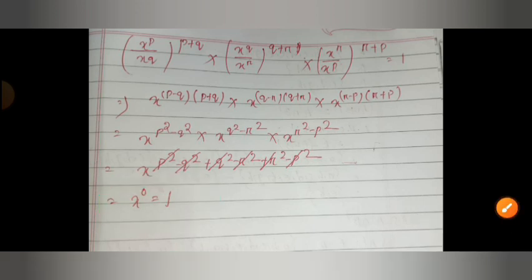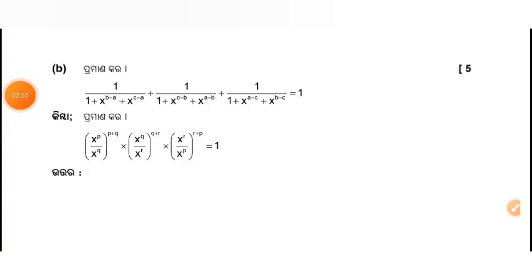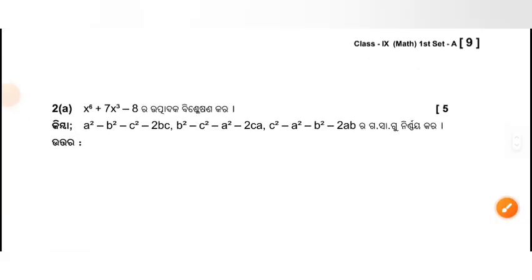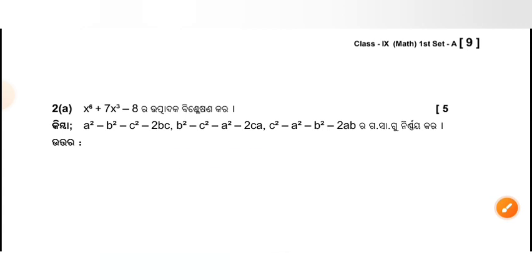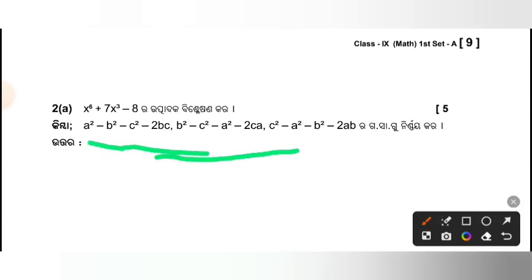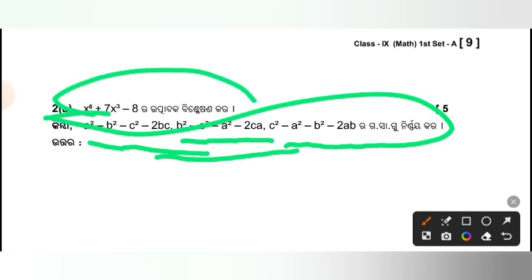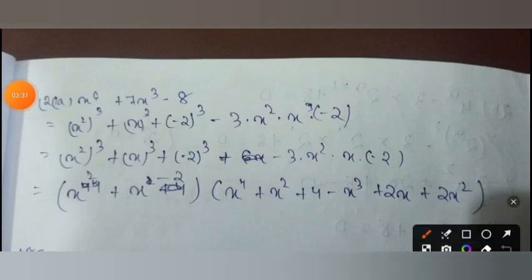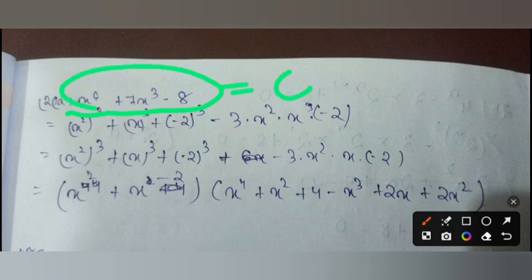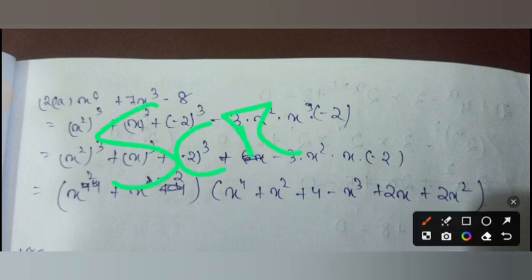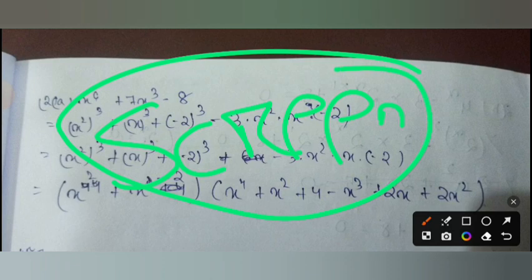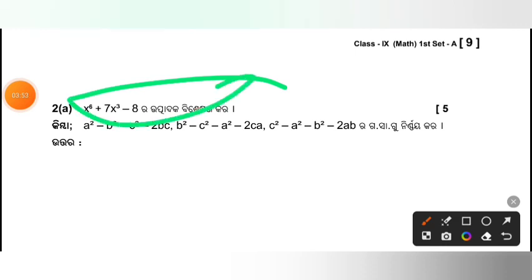X² by 0 equal to 1. Here is the answer. Next question answer. Now x to the power x plus 7x cube minus 8 — our addition is x to the power x plus 7x cube minus 8. The answer number of the question that you can see the answer.